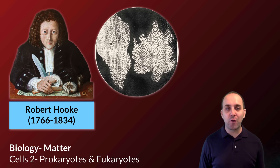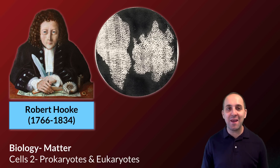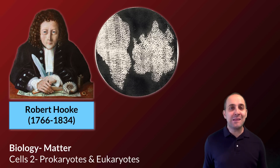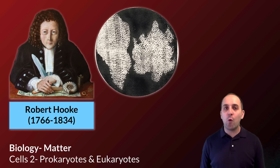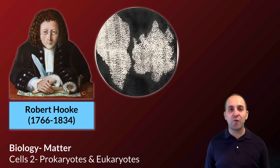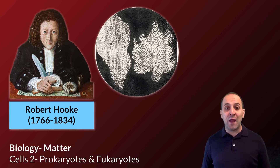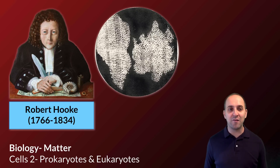Hi, and welcome to the second of our three-part series on cell structure here at the end of our matter unit. I figured I would start this one by talking a little bit about how cells got their names. This gentleman here is Robert Hooke, and he is the person who coined the term cells, while observing the structures he saw inside a piece of cork plant tissue. He thought they looked like the cells that monks stay in in monasteries, and so he named them as such, and it has stuck.